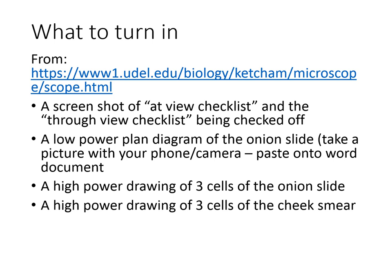As for what to turn in: you're going to go to this website, and there'll be one other. You'll need to take a screenshot of the at-view checklist and the through-view checklist. You're going to submit a low power plan diagram of the onion slide — I'll explain that later. You'll do a drawing and take a picture of it with your phone or camera and paste it onto a Word document. Next, a high power drawing of three cells of the onion slide and a high power drawing of three cells of the cheek smear.